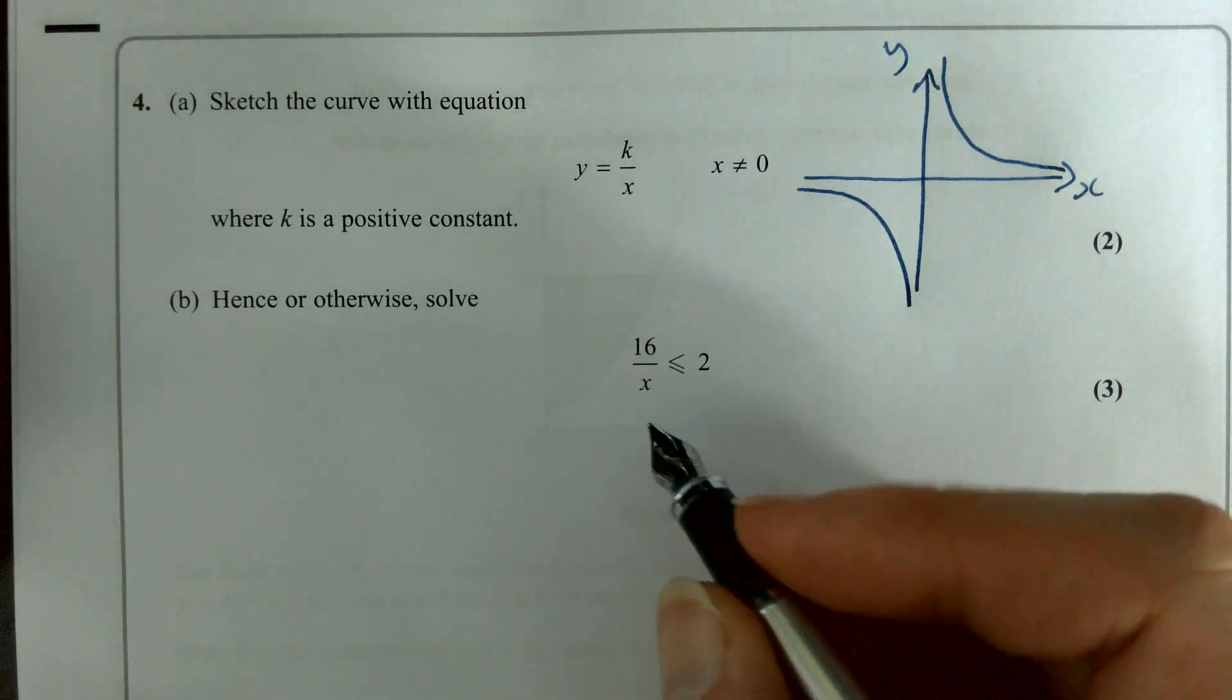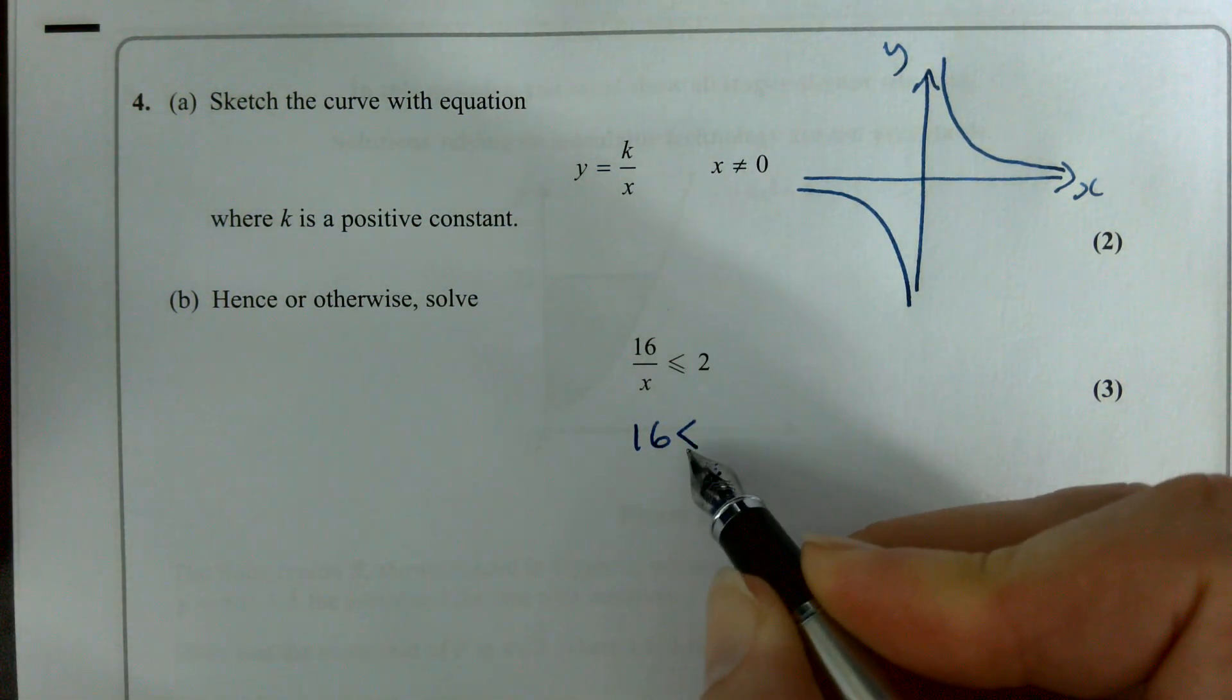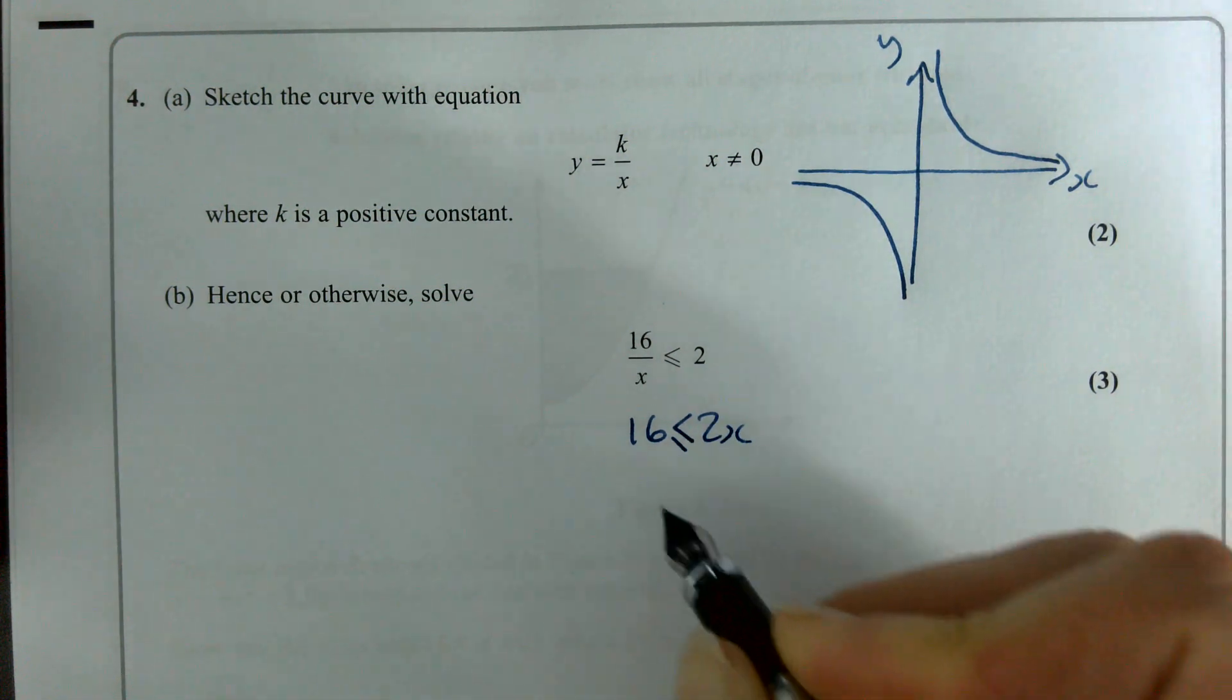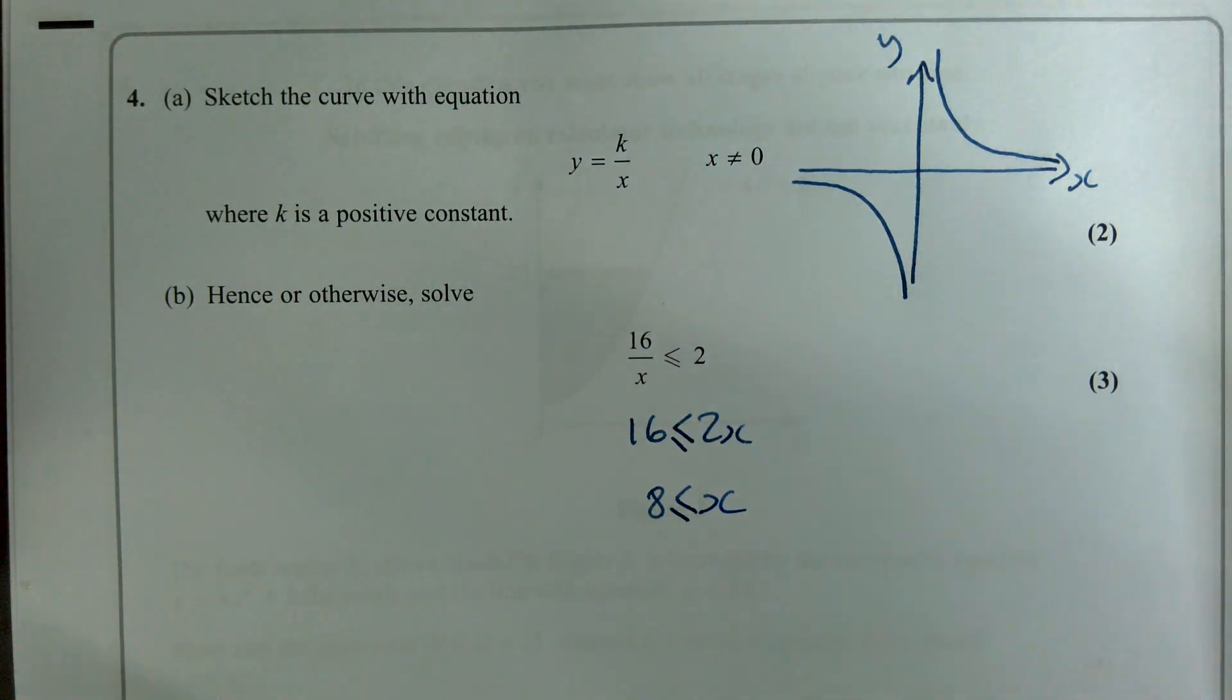I simply solved this to say, right, 16 is going to be smaller than or equal to 2x and then divide both sides by 2 and you've got 8 is smaller than or equal to x. However,